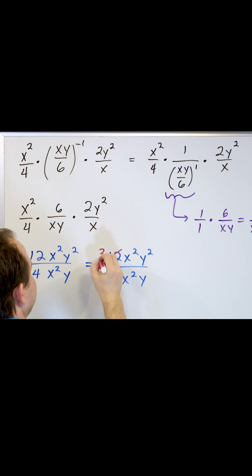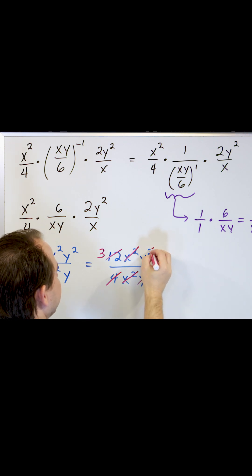When I divide the top by four I'll get three. Of course, I divide the bottom by four I get one. The x squared completely cancels with the x squared. One of these y's cancels with only one of those y's leaving one left over.